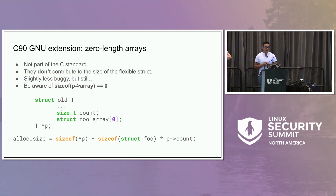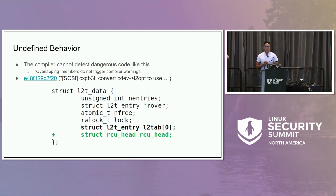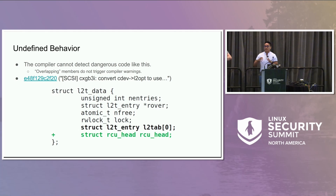Another problem is that people can introduce undefined behavior inadvertently. Here's an example of a patch that added a new member to a structure after the declaration of a zero-length array. The problem is that at runtime this array is going to be used as a flexible array — as a variable-length object — so its size at runtime is going to be much greater than zero. The easy fix is to move the zero-length array declaration back to the end of the structure. But if we also transform it into a flexible array member, now the compiler will enforce this, and the next time someone tries to add a new member after the array, the compiler will complain — making the compiler our ally.